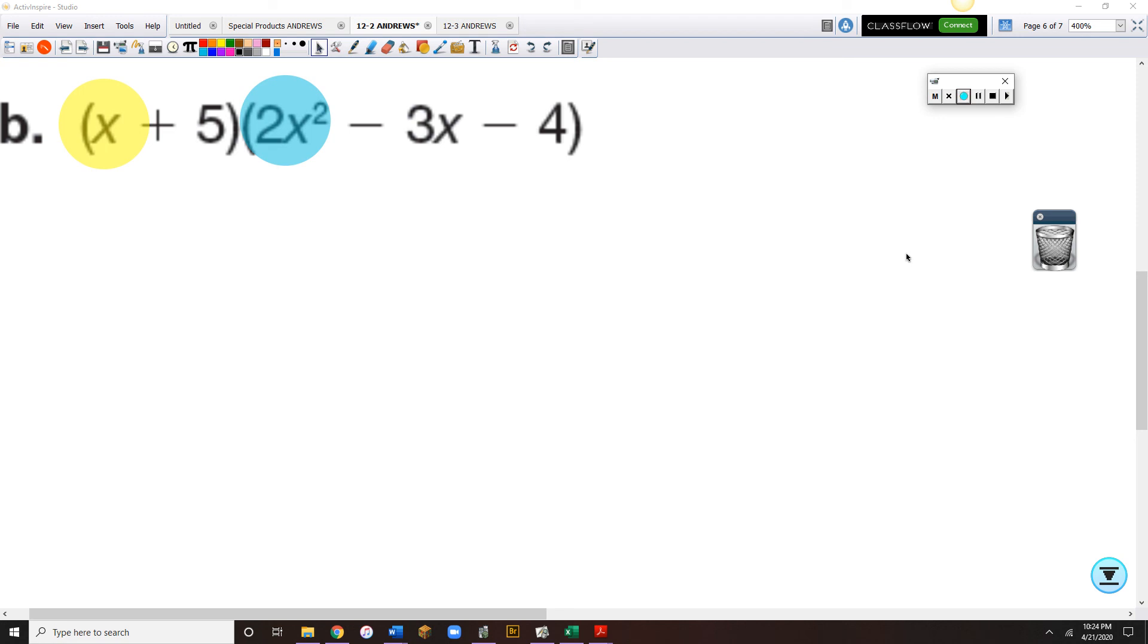Let's watch that one more time. So we've got x times 2x squared would be 2x cubed. x times a minus 3x would be a minus 3x squared. x times minus 4 would be minus 4x.